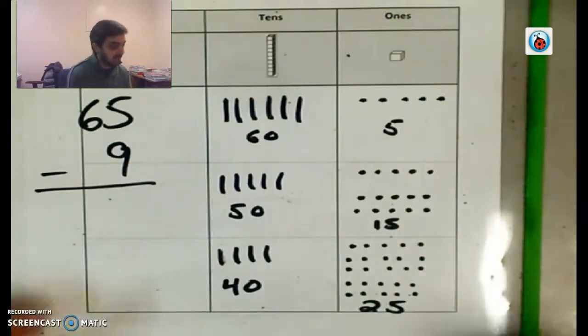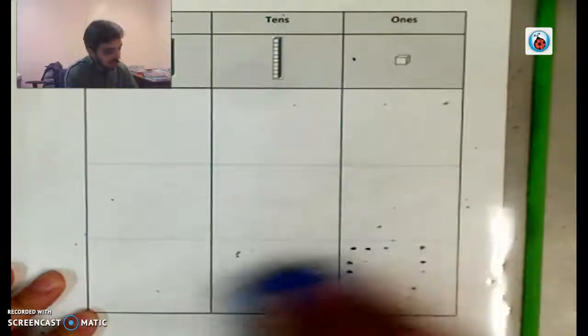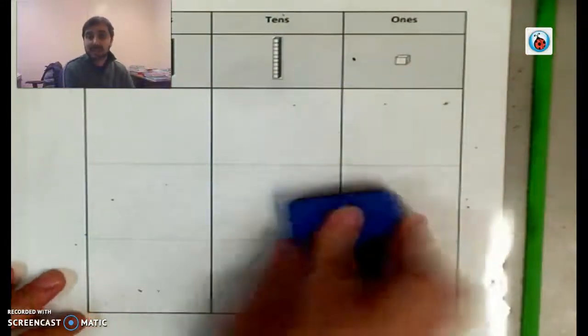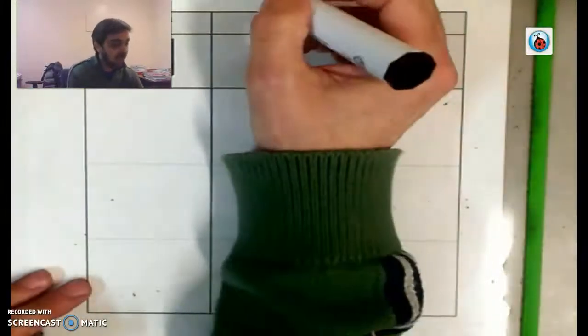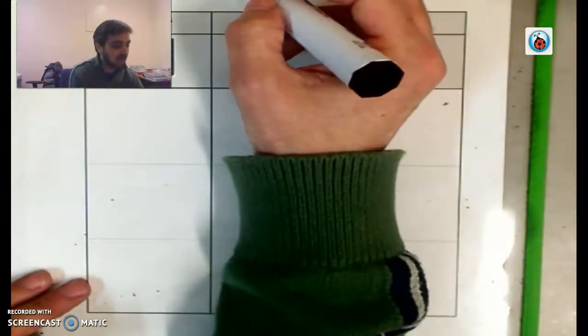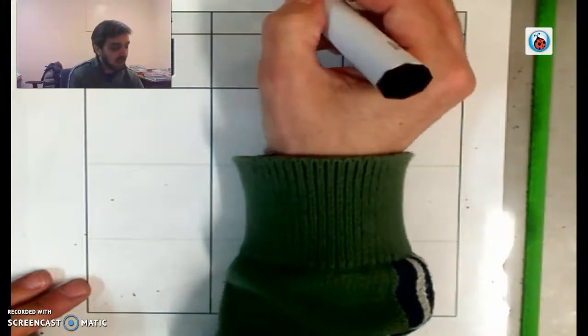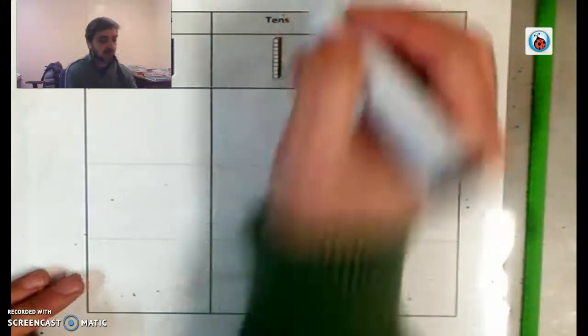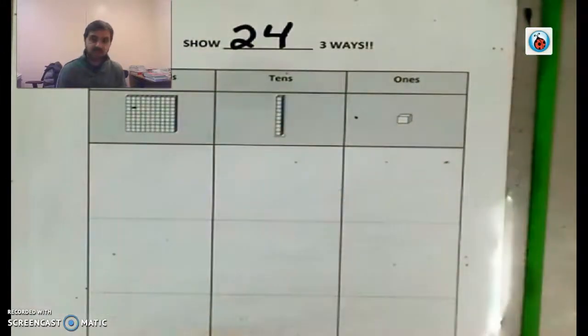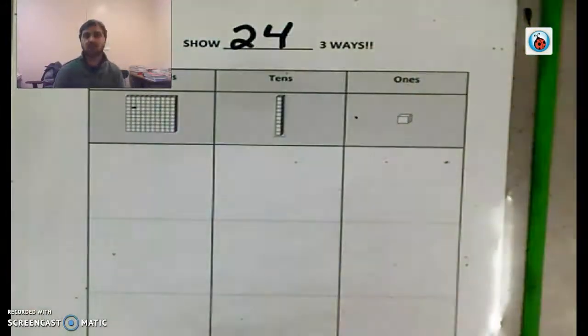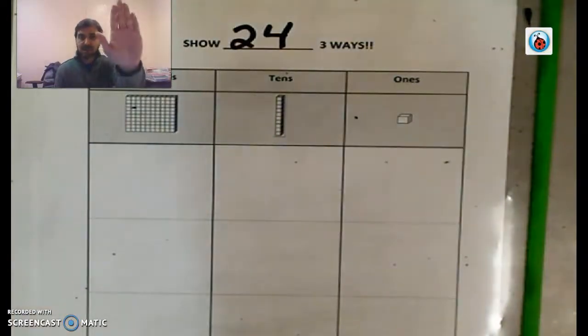All right. I'm going to give you one more to try and I'll give you some answers at the end of it. If you don't try it, your brain's just not going to grow as much. So it's up to you. Let's do the number, I don't know, 24. So erase what you have and see if you can show 24 in three different ways. Good luck. I'll see you in a little bit. Stop the video, do your work, and then come back.